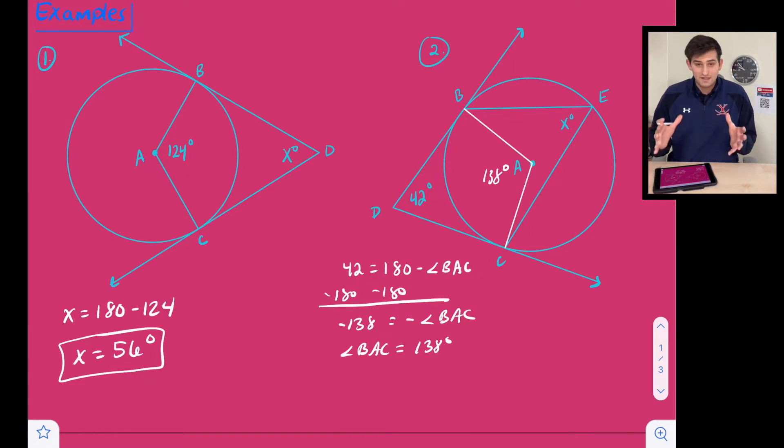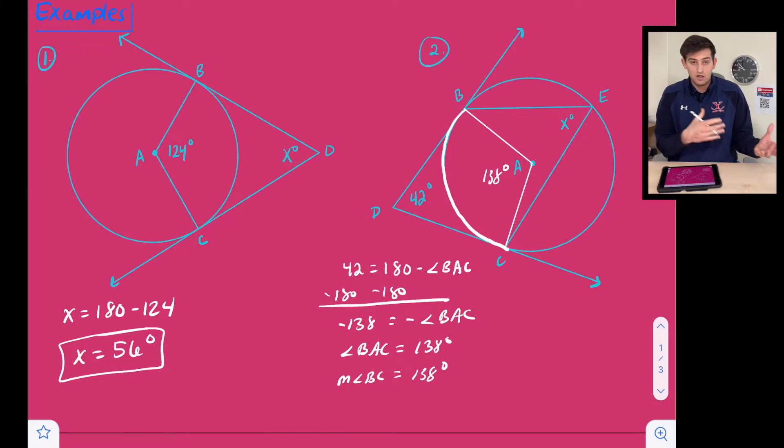So now what that's going to tell us is that's our central angle. So we now know that arc BAC, the measure of arc BAC is also 138 degrees because the arc there, the minor arc is going to have the same measure as its central angle. So now this angle right here, X degrees is an inscribed angle.